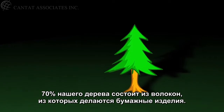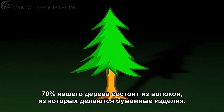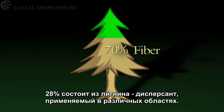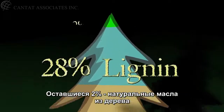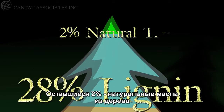Our tree: 70% is made up of fiber used to make paper products, 28% is a substance called lignin, a dispersant used in a variety of applications, and that remaining 2% — natural tree oils.